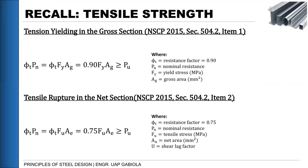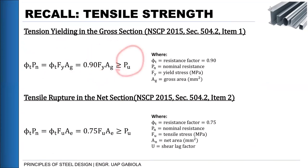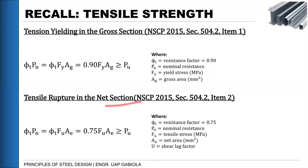We also discussed two limit states for tension members. Number one is potential yielding in the gross section, and number two is potential rupture in the net section. For gross section yielding, we need to satisfy that φPn equals 0.9 Fy·Ag, which must be greater than or equal to our ultimate loading derived from the load combination. For net section rupture, φPn must equal 0.75 Fu·Ae.